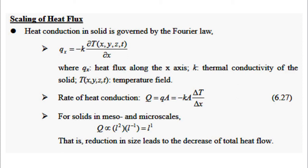The rate of heat conduction can be calculated by the equation: Q equals q times A, where A is the area. This is equal to minus k times ∂T/∂x times A. The partial derivative ∂T/∂x can be approximated as ΔT/Δx. So we can write Q as proportional to minus k times A times ΔT/Δx. For solids in mesoscale and microscale, Q is proportional to A times (k times ΔT/Δx).